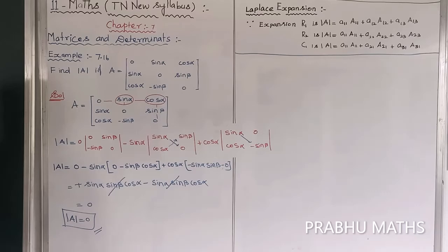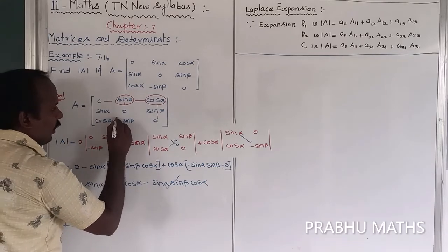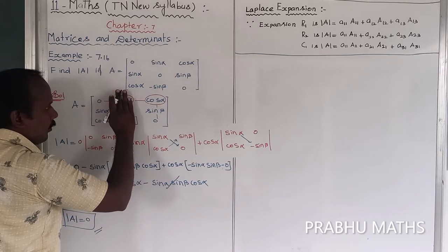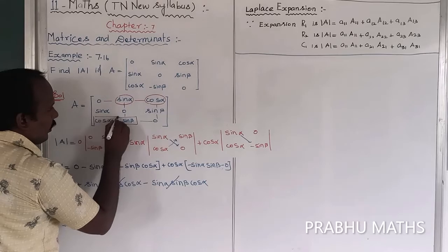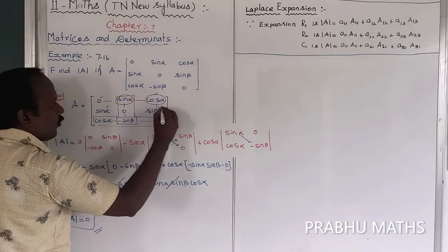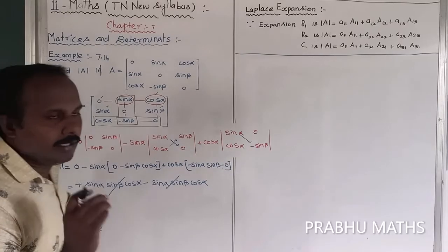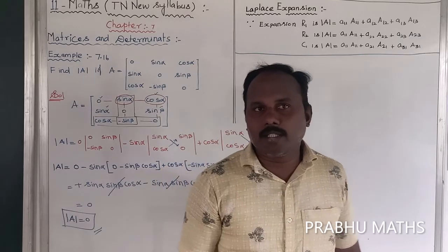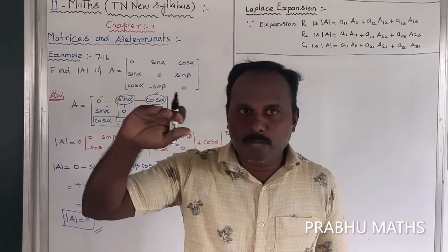That completes Example 7.16. As a final note on minors: the minor is computed along the first diagonal plus second diagonal, with appropriate sign changes — that's all.